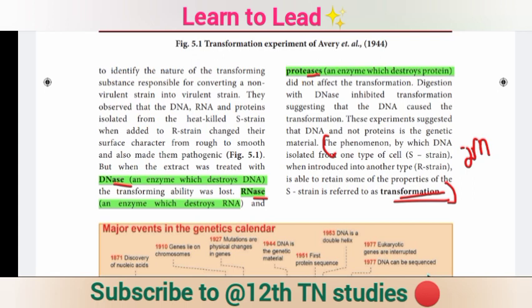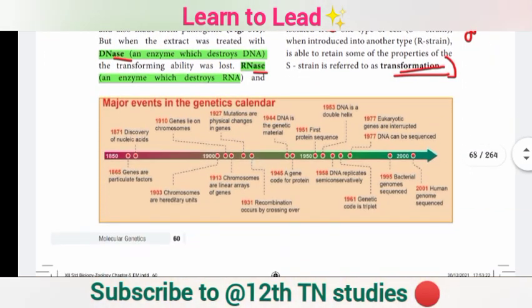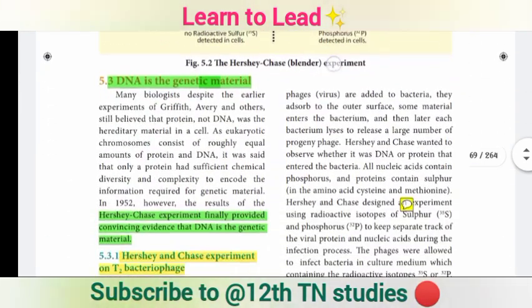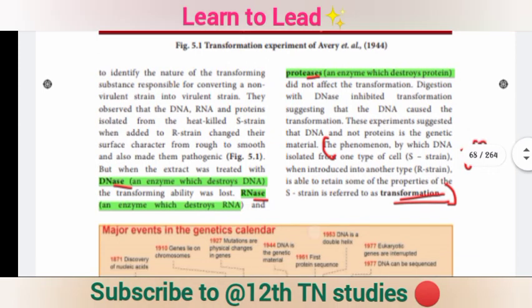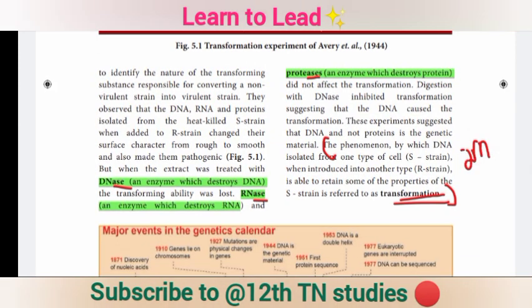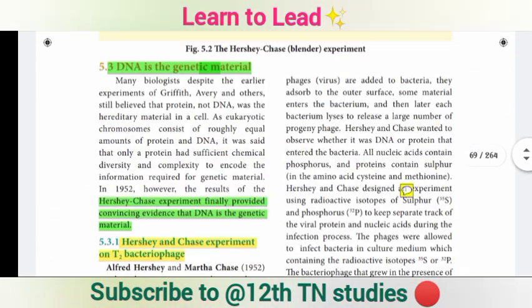One gene one enzyme hypothesis and one gene one polypeptide hypothesis — these are important definitions worth one or two marks. The highlighted points include important one-mark reasoning-type and true-or-false questions. Use a marker, pencil, or sketch pencil to highlight. RNAs, DNAs, and proteases are mentioned as key terms.